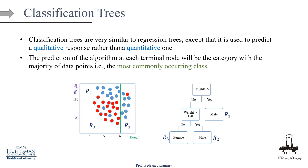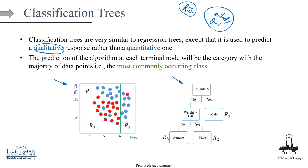Now let's talk about classification trees. Classification trees are very similar to regression trees, except they predict a qualitative response variable rather than a quantitative one. The decision tree criterion is also different — for regression we use RSS or MSE, while for classification we use entropy or Gini. The predictions at each terminal node are the category with the maximum majority vote — the most commonly occurring class. For example, R1 is blue (male), R2 is blue (male), R3 is red (female).